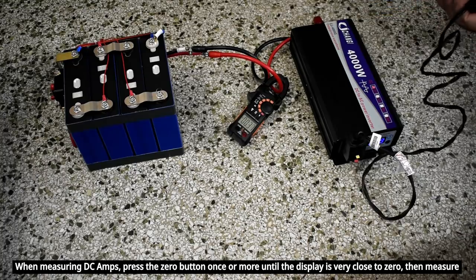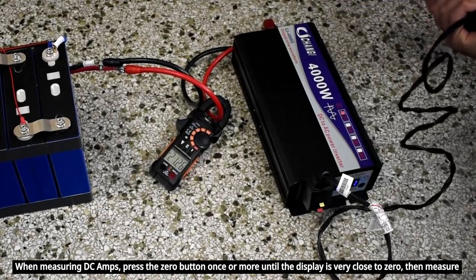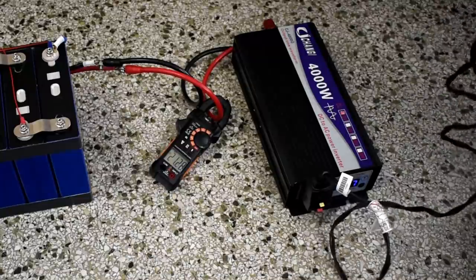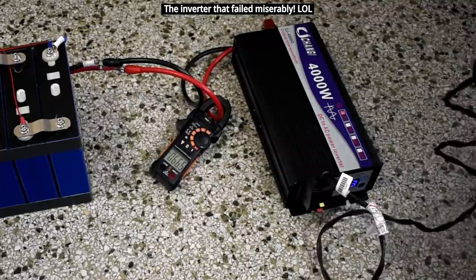For the DC current demonstration I have my lithium iron phosphate battery connected up to the inverter that you see right here that was tested in a previous video and you can see the varying levels of current based on the settings of the hair dryer.